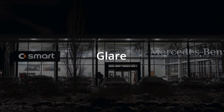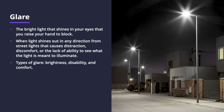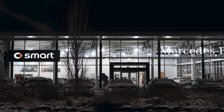The next form of light pollution is glare. Glare can be classified as the bright light that shines in your eyes that you raise your hand to block. Glare is defined as when light shines out in any direction from streetlights causing distraction, discomfort, and a lack of ability to see what the light is actually meant to illuminate. There are also different types of glare: brightness glare, discomfort glare, and disability glare. Glare from unshielded lighting is actually a public health hazard because light scatters into your eye and this can cause loss of contrast, which can also temporarily cause blindness.